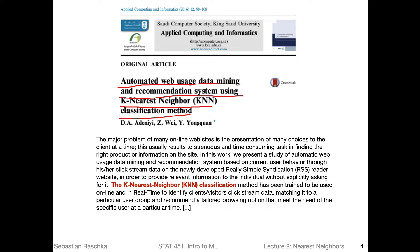They trained the K nearest neighbor classifier to be used online and in real time to identify clients or visitor click stream data, matching it to a particular user group and recommending a tailored browsing option that meets the need of a specific user at a particular time. You can think of it as a recommendation system recommending certain links or websites based on past or present browsing behavior.